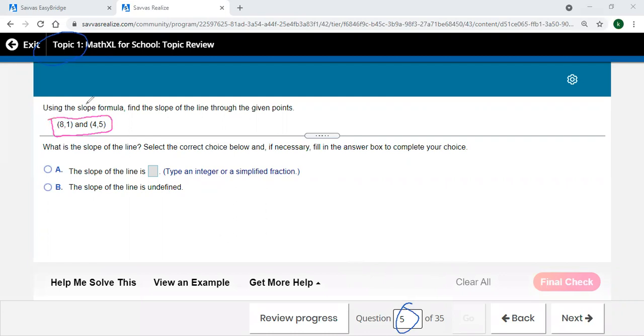When it comes to the slope formula, sometimes people do it different. Some people say change in y over change in x. Some say that it's like rise over run. And some use this formula that says like y2 minus y1 over x2 minus x1.